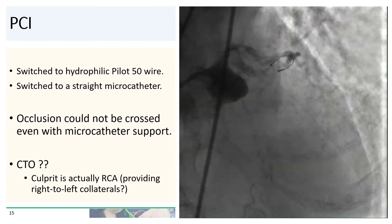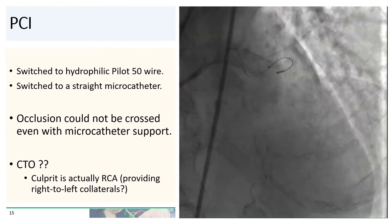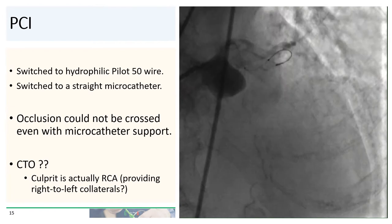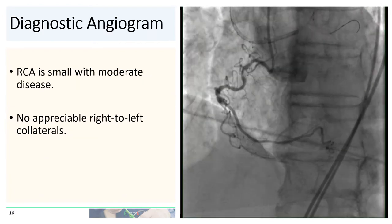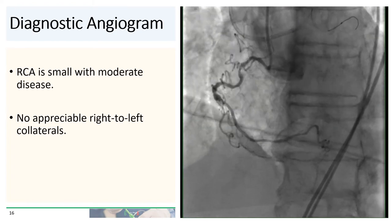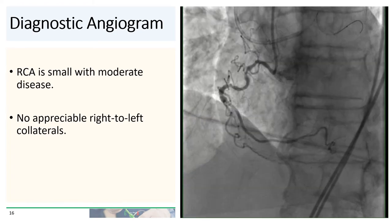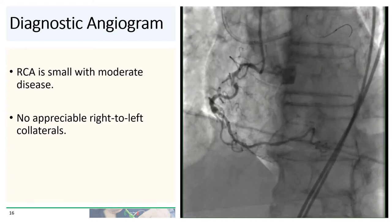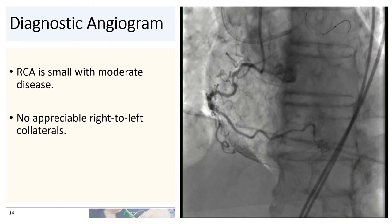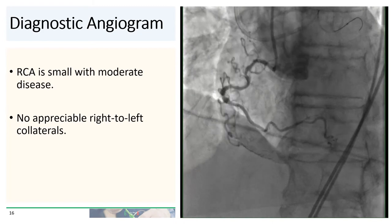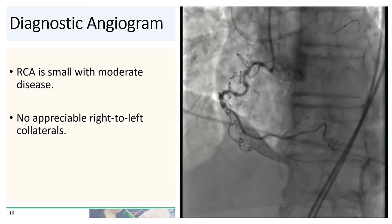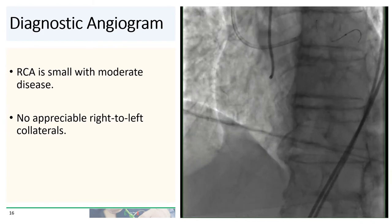We considered whether the culprit was actually the right coronary artery, which had been providing right-to-left collaterals. So we went ahead and obtained access into the contralateral groin and shot an angiogram of the RCA. The RCA was a relatively small vessel with moderate disease, but importantly, there were no appreciable right-to-left collaterals, again suggesting that the lesion in the LAD was the acute lesion and not a CTO.